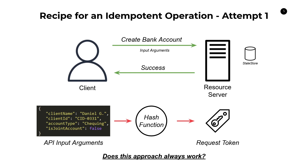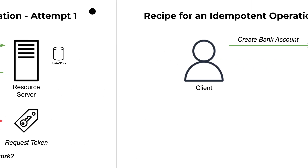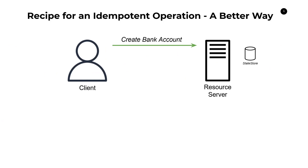I've personally seen a lot of people use this approach and be bitten by it in the past. This is usually what people do as a first attempt for idempotency in their APIs. So what is a better way? It turns out there is a better way, and it's quite simple.